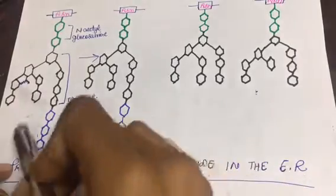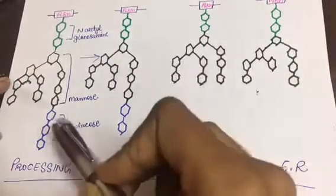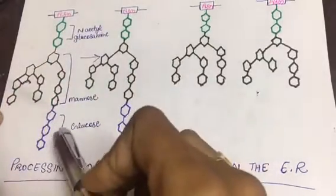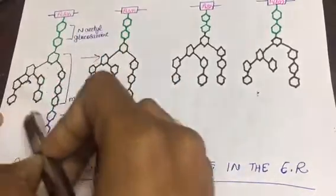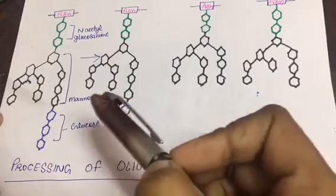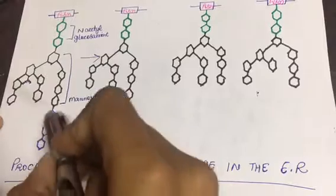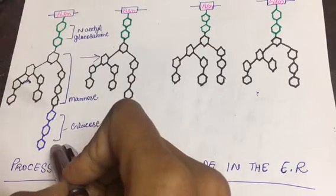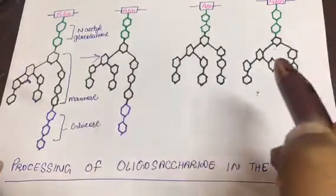So if it is not done properly and there is a problem in folding, then in endoplasmic reticulum, calnexin or calreticulin help it in modification. If it is not done properly, then it will be made again, or then it will be degraded. That is a separate topic.